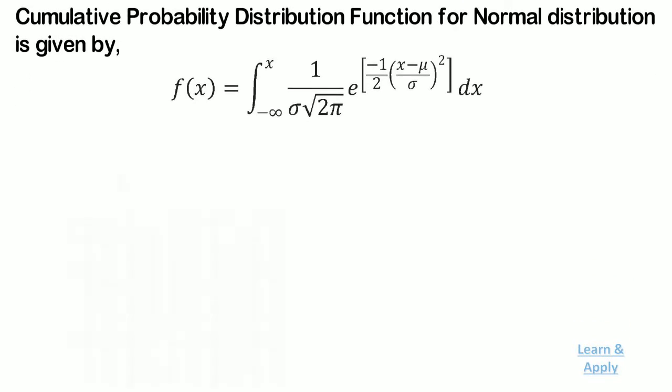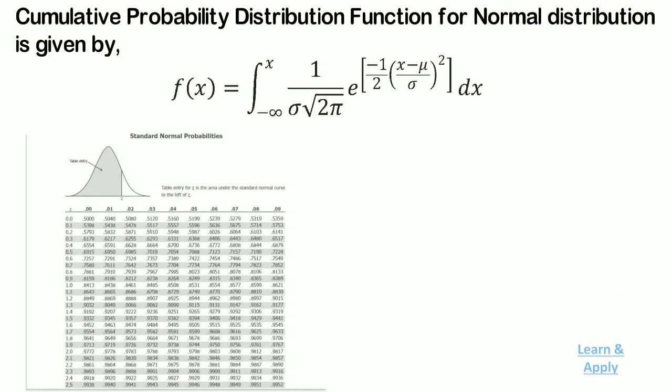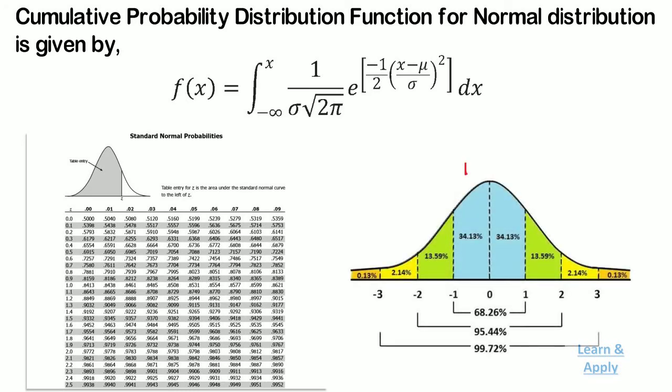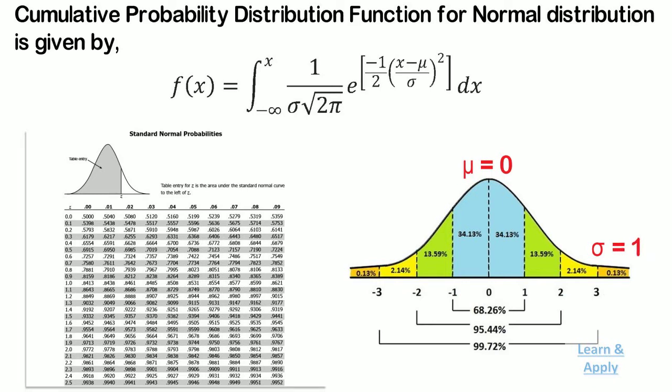Cumulative distribution function for normal distribution is given by this formula. This integral cannot be easily solved; however, we can use tables of standard normal distribution which are readily available. Standard normal distribution has mean equal to 0 and standard deviation equal to 1.